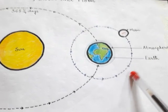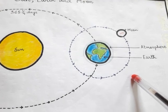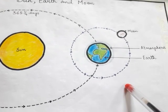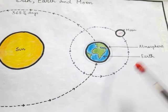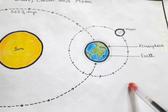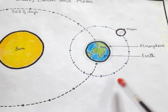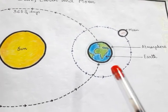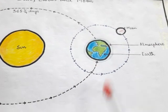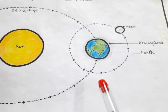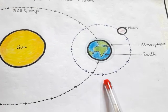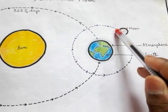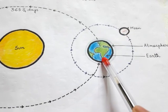Now we will study about satellites. The word satellite means a companion — satellites are heavenly bodies that move around planets; they are the companions of planets. There are two types: natural satellites and man-made satellites. The Moon is a natural satellite of the Earth.